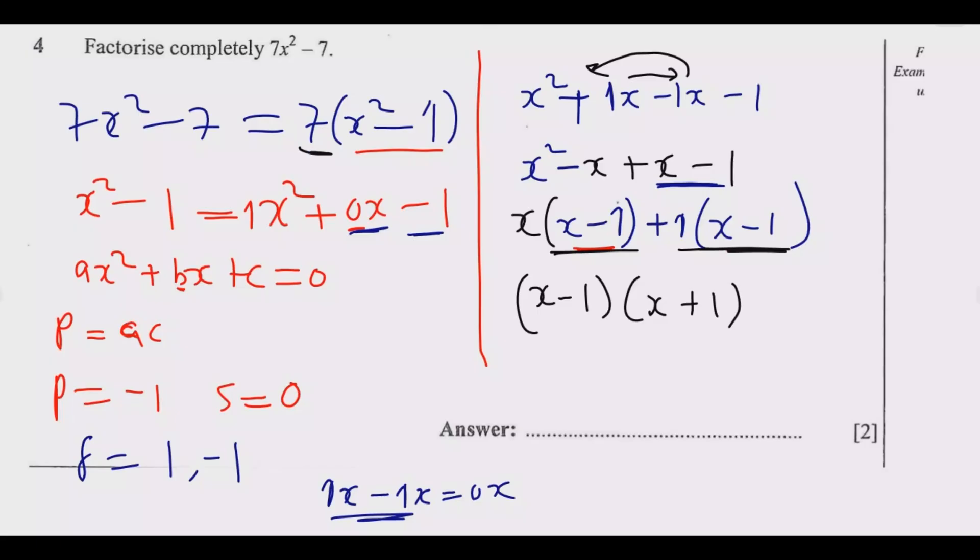Then don't forget the 7 that we put here. So it's going to be now 7 multiply by (x - 1) multiply by (x + 1). This is the answer that you get. If you can do that, then you're good to go to get these two marks. This is how you answer this question. Don't forget to join me in the next episode as we look at question 5.